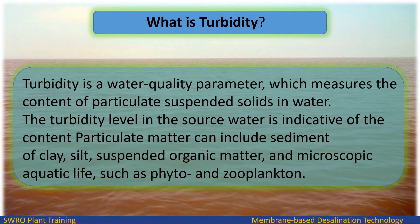What is turbidity? Turbidity is a water quality parameter which measures the content of particulate suspended solids in water. The turbidity level in the source water is indicative of the content of particulate matter, which can include sediment of clay, silt, suspended organic matter, and microscopic aquatic life such as phyto and zooplankton.